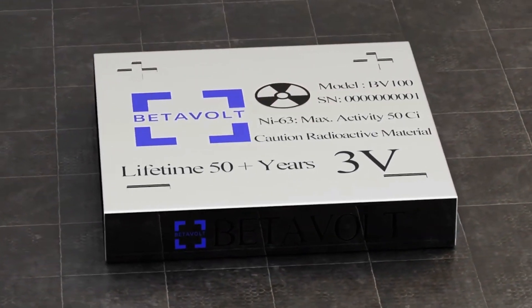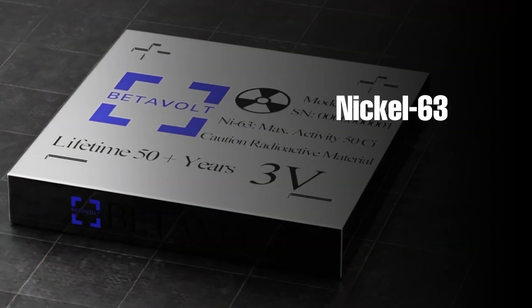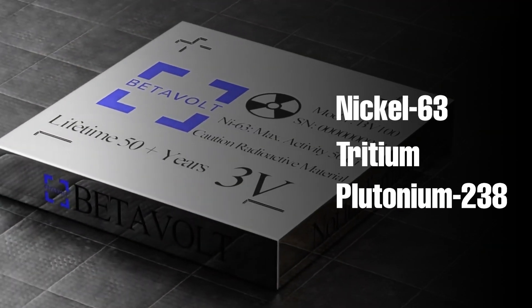nuclear batteries use the natural decay process of isotopes like nickel-63, tritium, or plutonium-238.